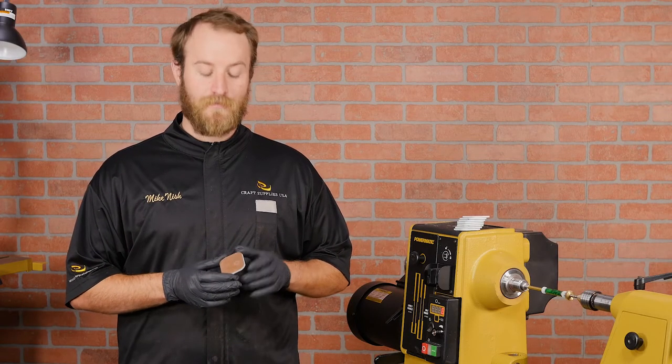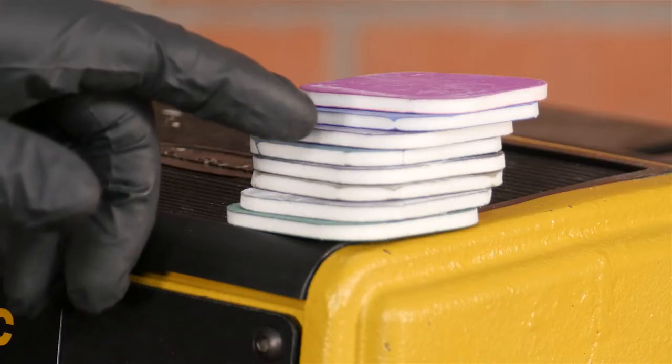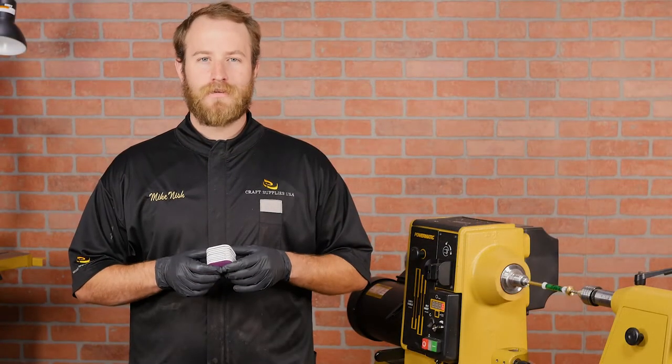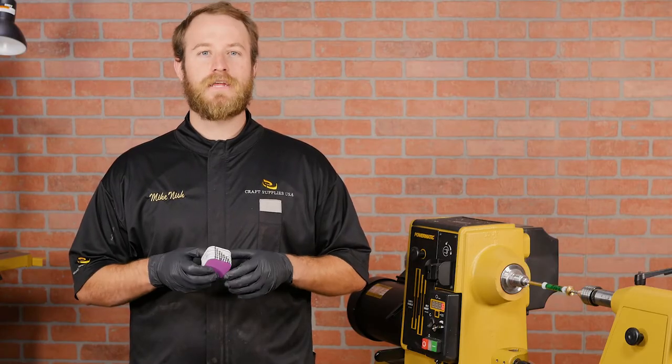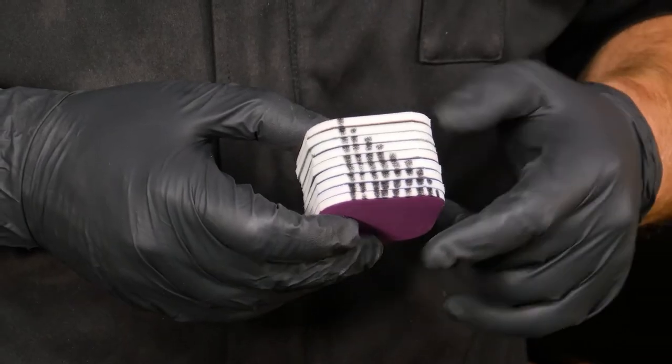There are a ton of different options out there for sanding, but my favorite is the microsurface pen finishing pads that come in a set from 1500 to 12,000 grit. After a while, it can be hard to tell the grits apart, so when you get a brand new set, mark them to make sure you can keep them in order.